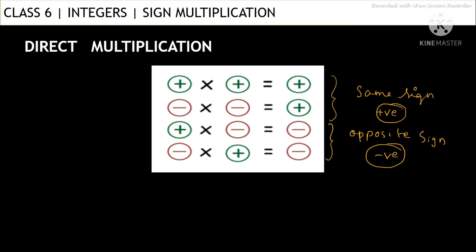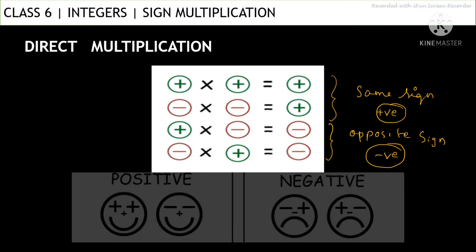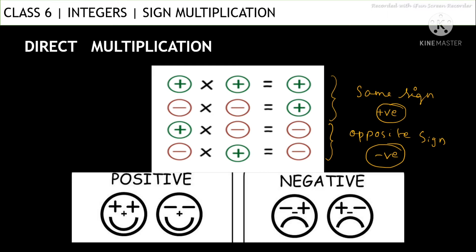To remember it clearly: same sign multiplied gives positive, opposite sign multiplied gives negative. To understand it better, look at these faces — positives and negatives. When both faces are positive or both are negative, we see happy smiling faces. So it is easy to remember: both positive gives positive, both negative gives positive — both are smiling faces, so remember the word 'happy.'